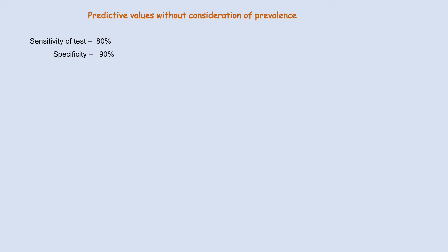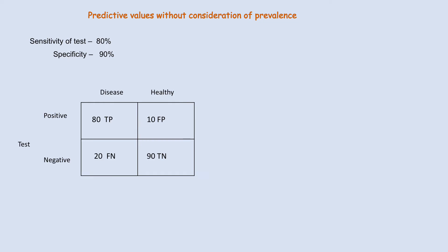Suppose we have a diagnostic test with sensitivity of 80% and specificity of 90%. If the test result is positive, we can calculate positive predictive value. The formula is true positive divided by all positive results — that is, true positive plus false positive. In this case, positive predictive value is 89%, meaning there is an 89% chance that a positive result is a true positive, or an 89% chance that the person has the disease.